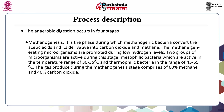The last stage in the anaerobic digestion process is methanogenesis, where methanogenic bacteria convert acetic acids and its derivatives into carbon dioxide and methane. The methane-generating microorganisms are promoted during low hydrogen levels. Two groups of microorganisms are active during this stage: mesophilic bacteria, active in the temperature range of 30 to 35 degrees Celsius, and thermophilic bacteria, working in the range of 45 to 65 degrees Celsius. Gas production during methanogenesis comprises 60% methane and 40% carbon dioxide.